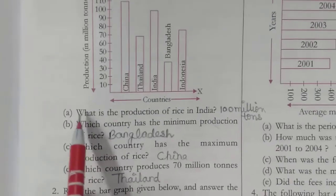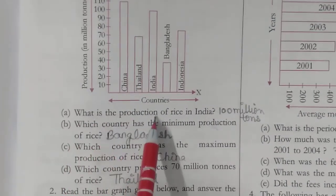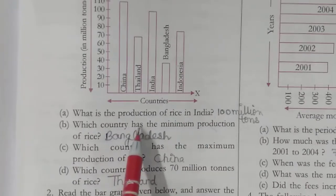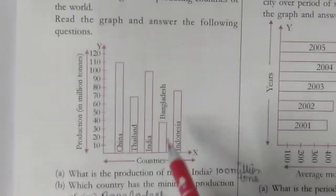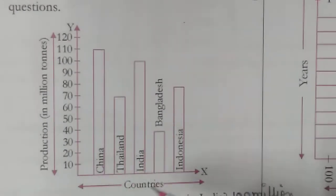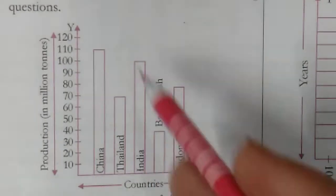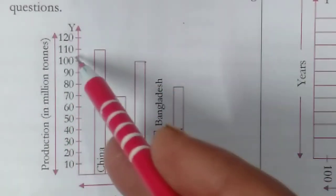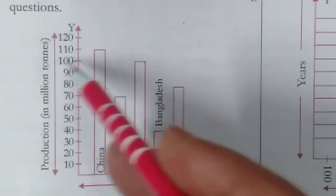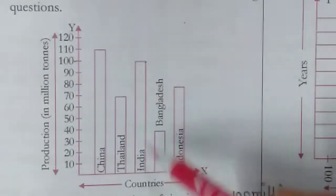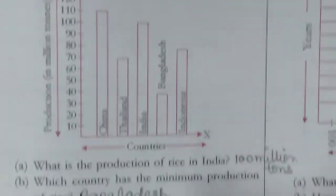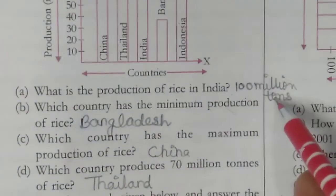What is the production of rice in India? In India, the wheat production is 100 million tons.